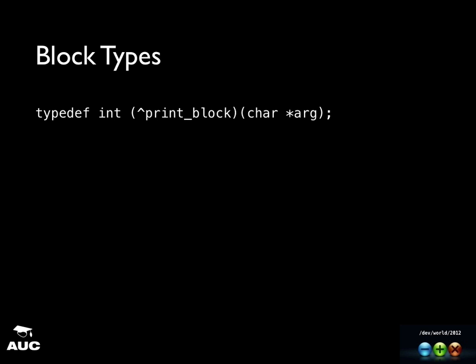All you have to do to create a block type is typedef, then int, then caret, then the name of whatever you want to call it, and then your parameter list. And if you type 'typedef block' in Xcode, it'll actually generate that and give you the statements to put in for the argument list — Xcode autocomplete is great.